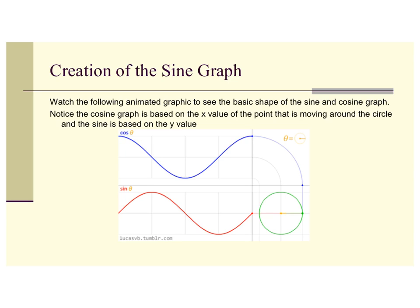For cosine, remember on the unit circle we had cosine as your x value and sine as your y value. If you look at this green circle, notice the x value is actually falling — it's going down all the way to 180 degrees, and then it transitions and starts going in the positive direction, going back up. So you can see a correlation to the x values within a unit circle.